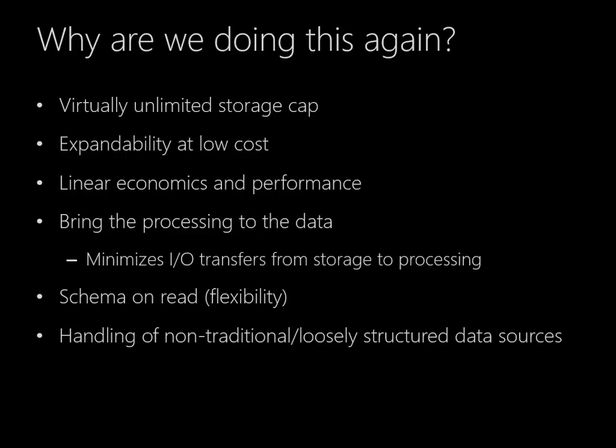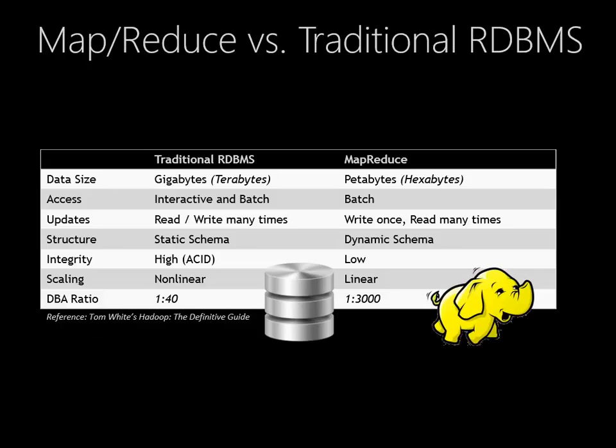Finally, and maybe most importantly, we can handle the non-traditional, loosely structured data that we haven't really been able to put into relational schemas before. I'll close with this table from Tom White's Hadoop: The Definitive Guide, where he compares the traditional relational system to MapReduce — differences like data size limitations, expandability, data integrity, structure, and so on. The important point of the table is really not to look at MapReduce as a replacement for a traditional relational system or vice versa. Each is potentially good at different things, and we just have to decide where to apply this technology within our overall strategy.